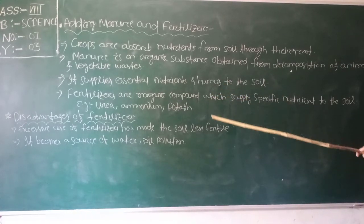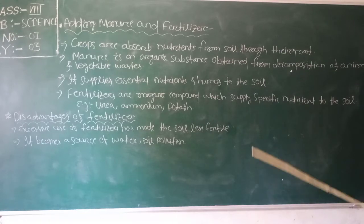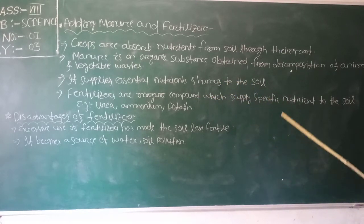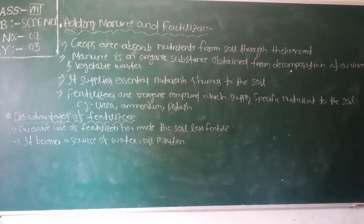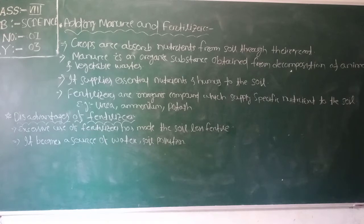Fertilizers are inorganic compounds or substances which supply specific nutrients to the soil. For example, urea, ammonium sulfate, and potassium sulfate. The use of fertilizers has helped farmers to get better yield of crops such as wheat, paddy, and maize.